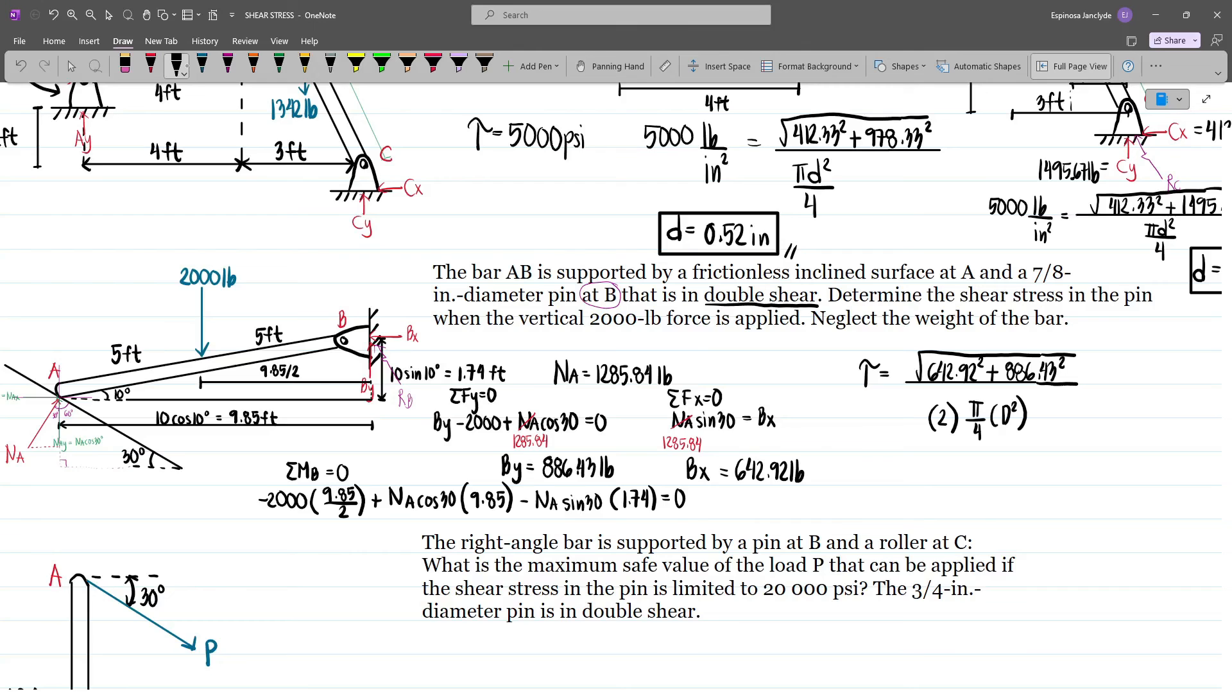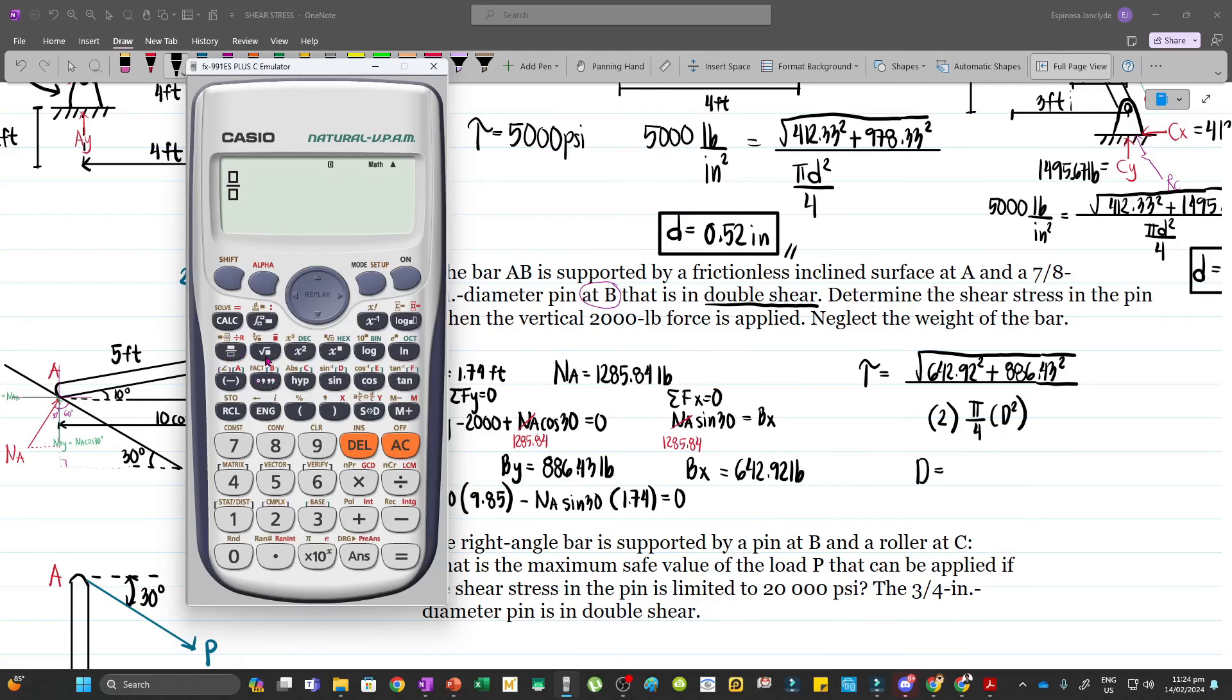And so solving for tau, we have square root of 642.92 squared plus 886.43 squared divided by 2 times pi over 4 times D squared.